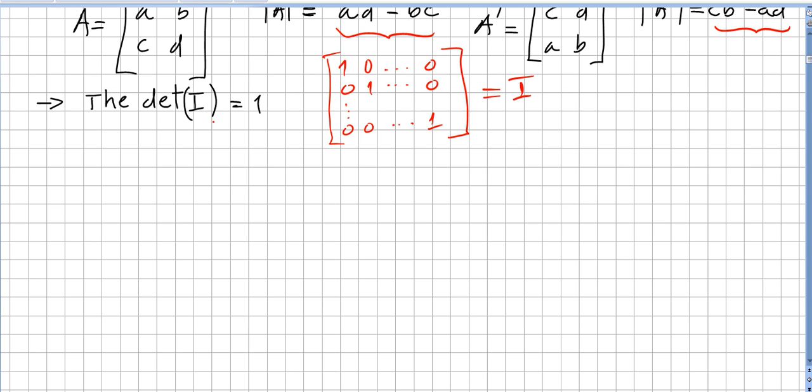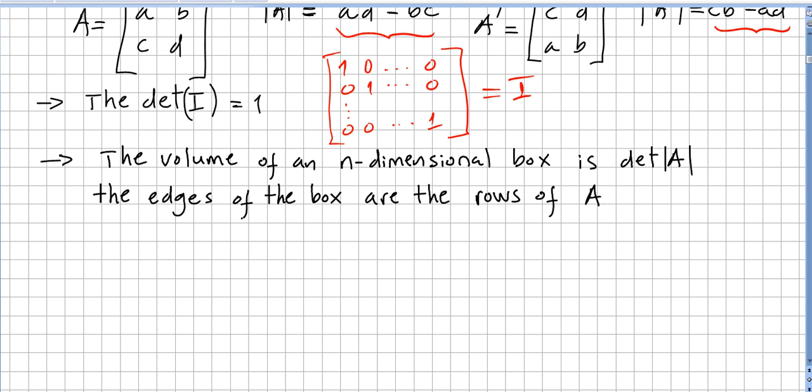We are going to see now a geometrical application of the determinant. We can use the determinant to find the volume of a box. So the volume of an n-dimensional box—we usually think of a box as a three-dimensional object, but we are calling box the product of sides in any n-dimensional space.